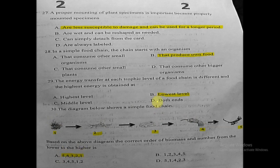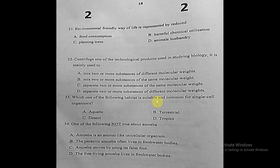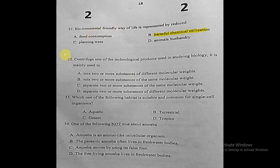Section two, question one: an environmentally friendly way of life is represented by reducing what? The correct answer is reducing harmful chemical utilization, because reducing harmful chemicals makes the environment less polluted and more friendly.